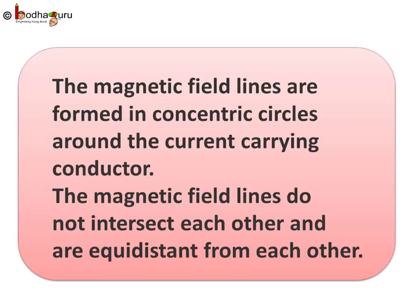So to sum up what we learnt today, in case of current carrying straight conductor, the magnetic field lines are formed in concentric circles around the current carrying conductor. And these lines do not intersect each other, also they are equidistant from each other. That's all for now.